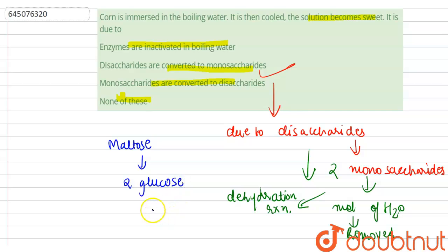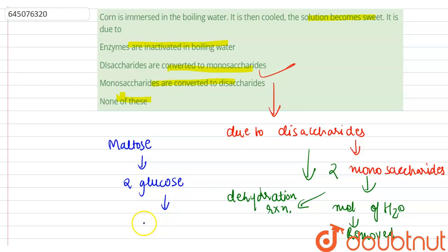The two monosaccharides are bonded via a dehydration reaction, also called a condensation reaction, which leads to the loss of a molecule of water and the formation of a glycosidic bond.